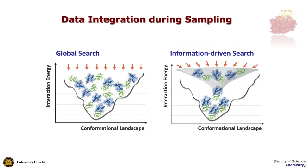If you don't have data you have to search the entire interaction space and generate many more models to identify the global minimum. But if you have data, you can concentrate the search in some region of space, which hopefully points you to the right solution much more quickly. This has advantages — you don't need to sample the entire space — but it also has danger: if the information is bad or has wrong data, you might search in a completely wrong region of space. That's called the GIGO principle — garbage in, garbage out. So you have to trust the information if you're going to use an information-driven search approach.